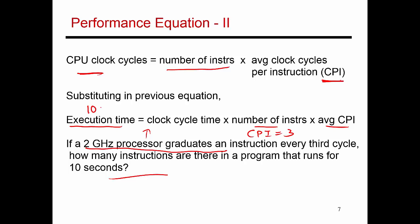Execution time was 10 seconds. The clock cycle time is 1 by clock speed, so it's 1 by 2 times 10 raised to 9, and the average CPI is 3. So the number of instructions equals 10 times 2 times 10 to the 9 divided by 3. It's essentially 6.67 billion instructions.